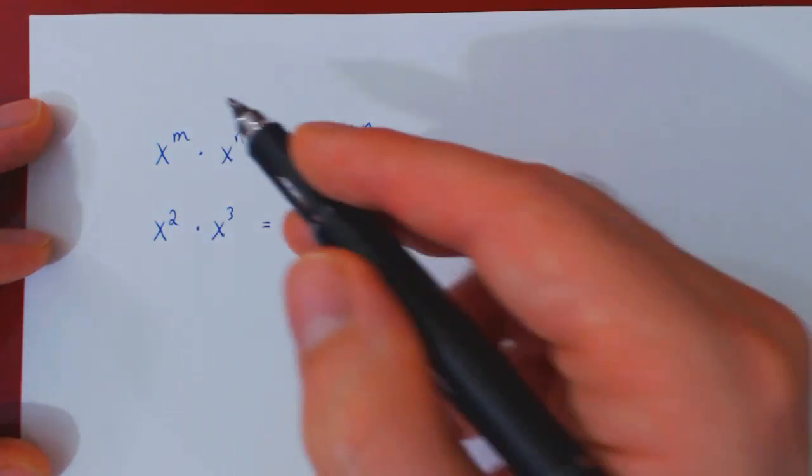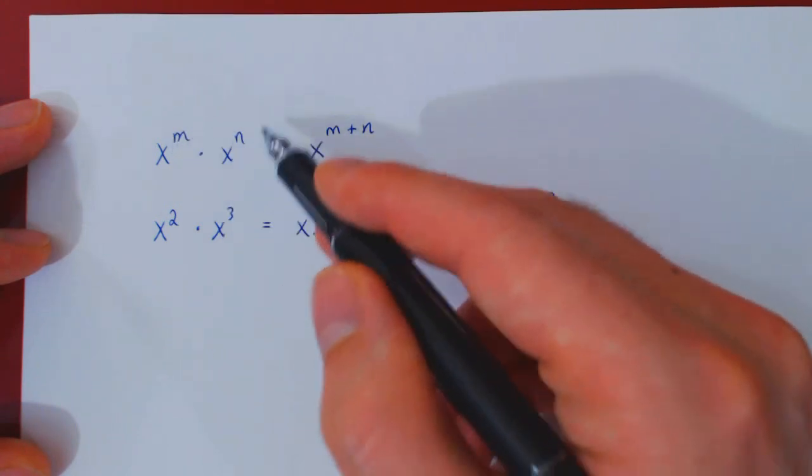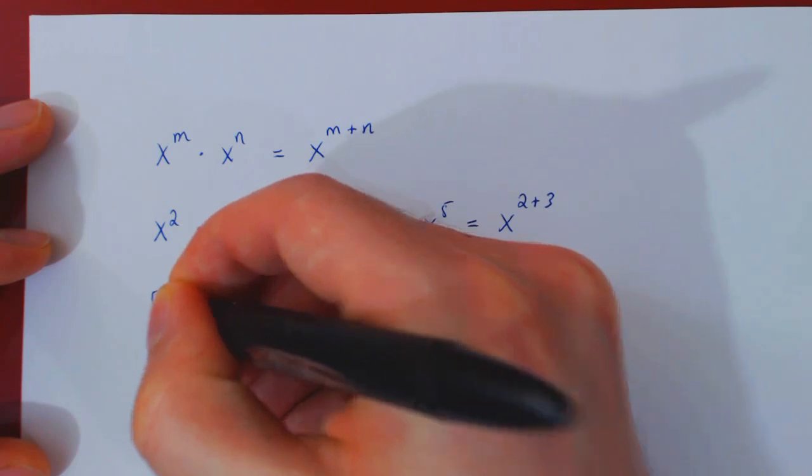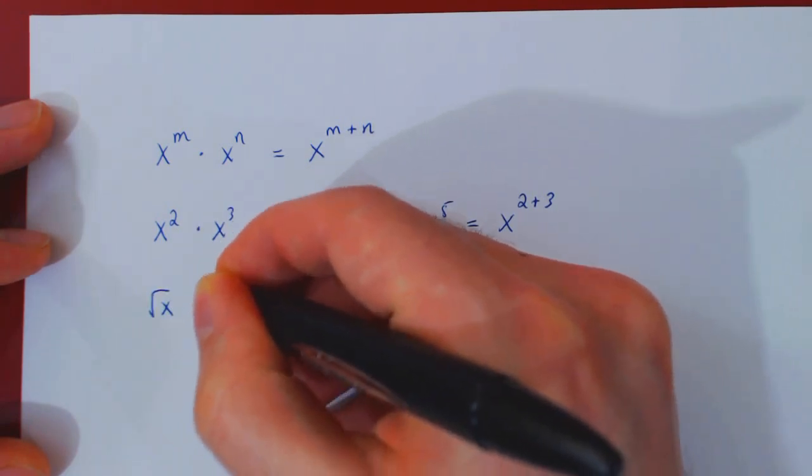And let's do one more example where we take fractional exponents. So if you had, say, the square root of x times the cube root of x.